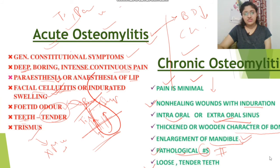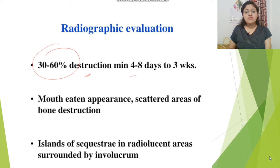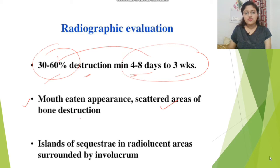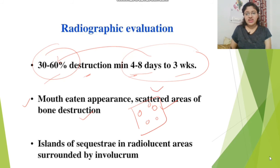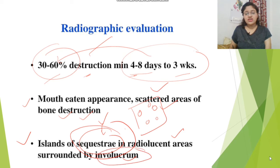Radiological features: 30 to 60% destruction of bone is visible, minimum within 4 to 8 days to 3 weeks. There is a moth-eaten appearance with scattered areas of bone destruction — either focal or diffuse destruction. Islands of sequestra appear as radiolucent areas surrounded by involucrum, as studied in the pathophysiology section.